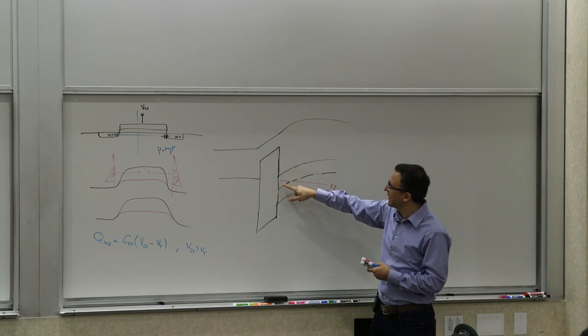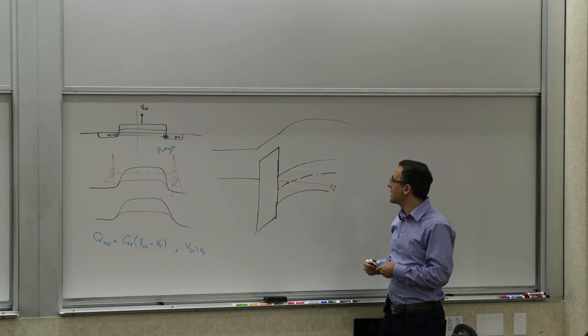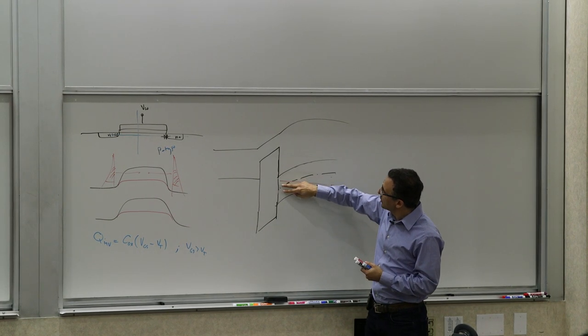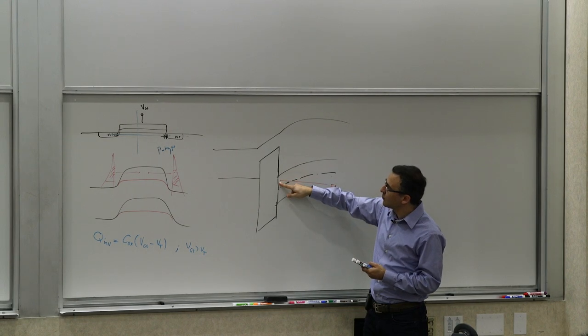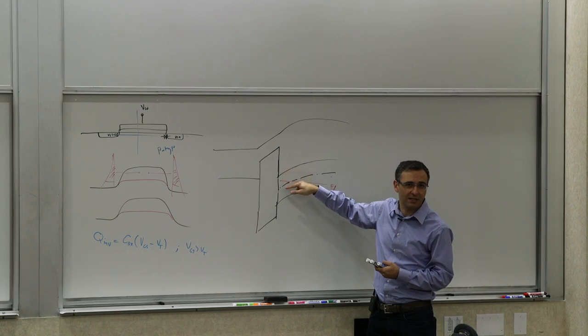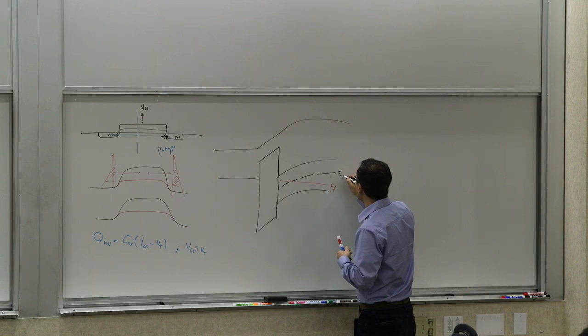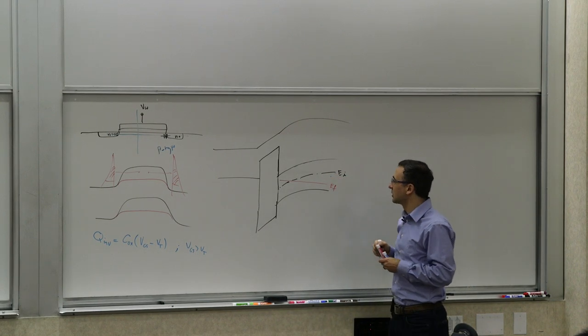So this would be the work function of the metal. This is the electron affinity of the surface. So what you can see is that this is inversion. You can see inversion here. And you can see that at some point, now here at the surface, you look more like an n-type, because your Fermi energy is closer to the conduction band, it's above the Ei, whereas it was below Ei in the bulk.